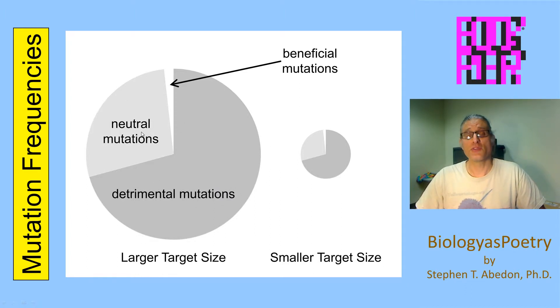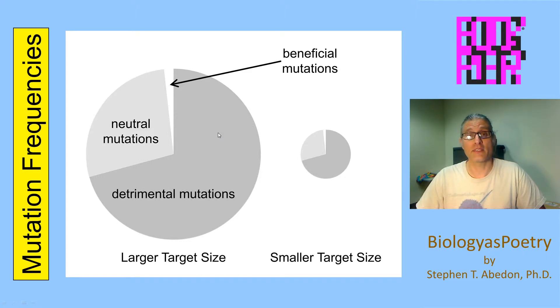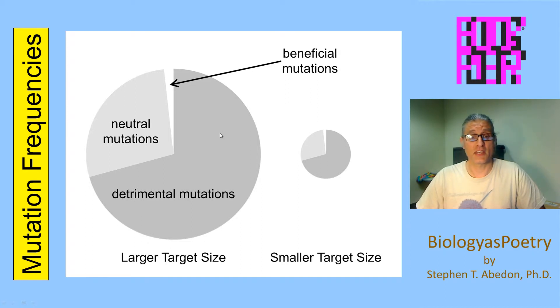And also neutral mutations, which have a relatively small, if no, impact on the potential for an organism to replicate and survive relative to that ability associated with the parental genotype.